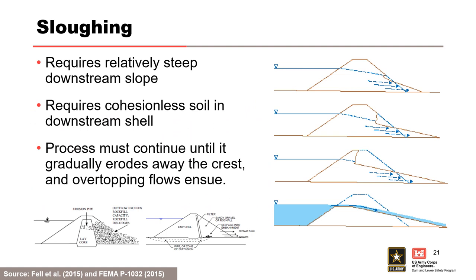Sloughing is the third internal erosion breach mechanism. For sloughing to occur, the downstream face would have to be relatively steep and the downstream shell would have to be comprised of cohesionless soil, probably sandy gravel or gravelly sand, possibly with some silty fines. Increased seepage would have to discharge into the downstream shell — for a concentrated leak in the core of a zoned embankment, or for internal erosion in the foundation. The over-steepening and progressive slumping process would have to continue until it gradually eroded away the crest and allowed the reservoir to overtop the embankment. Sloughing is a slowly developing breach mechanism, which should take days or weeks to lead to breach.